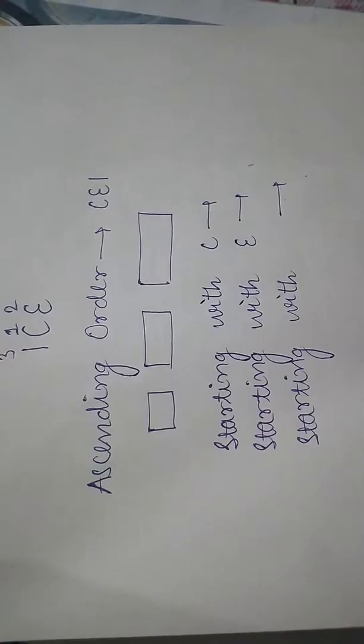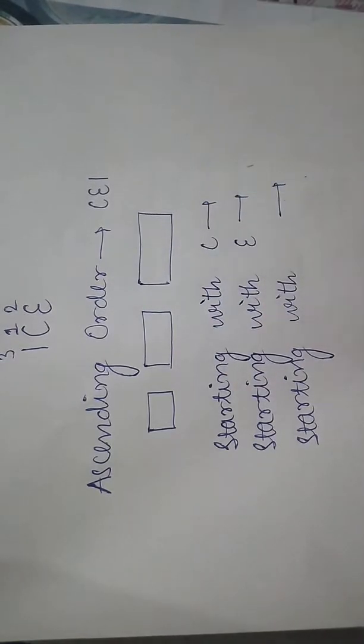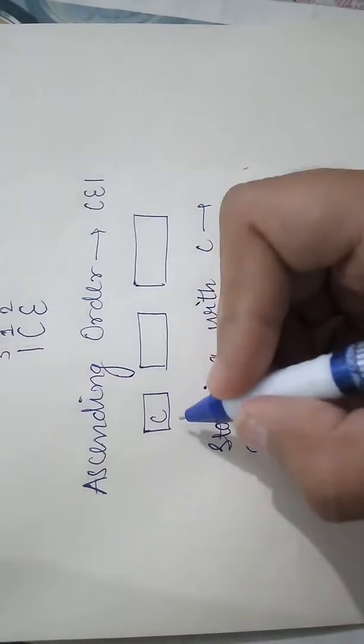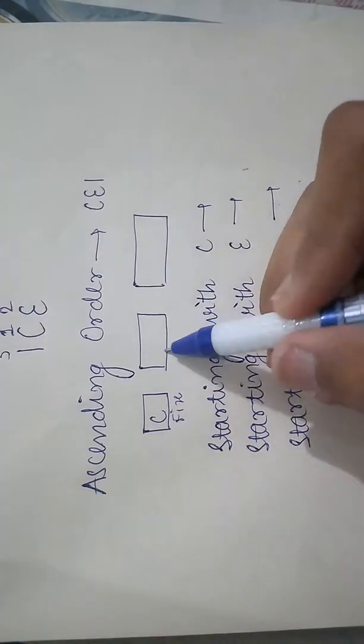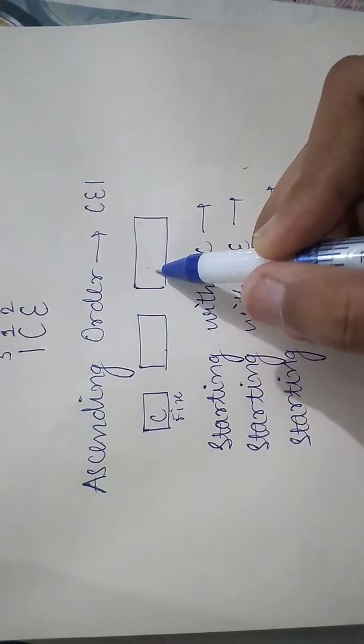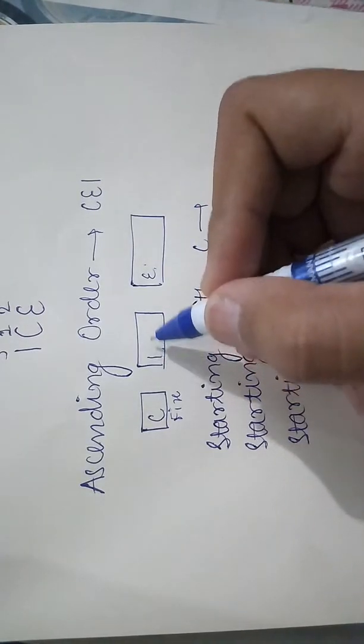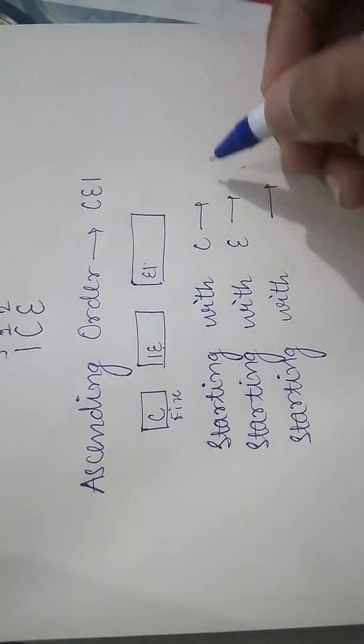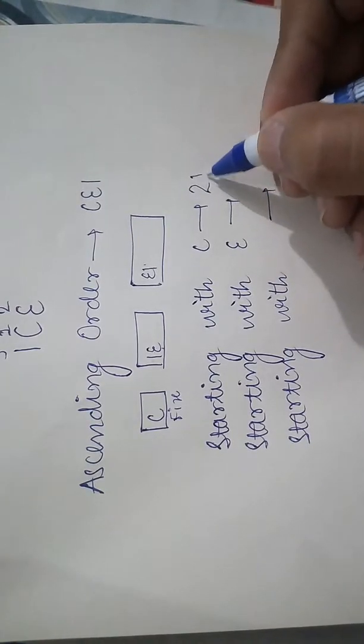So, we have the first words starting with C. C is fixed. The rest we have two blank blocks, which we can fill with either I, E, or E and I. So how many ways will we start? Two ways, or we can write two factorial ways.